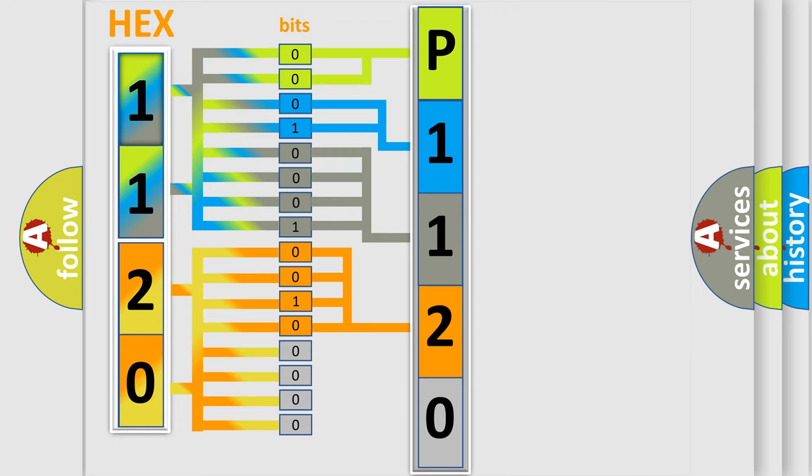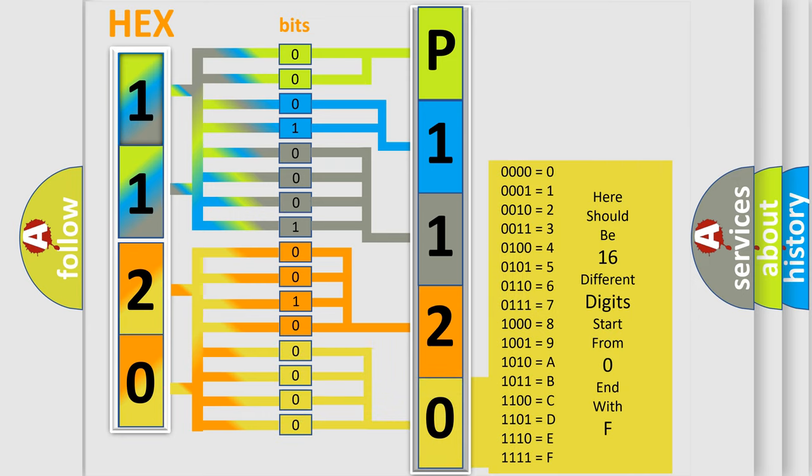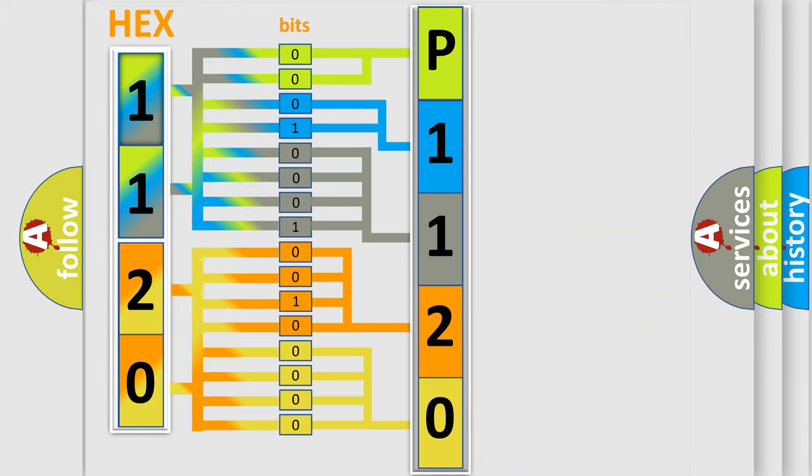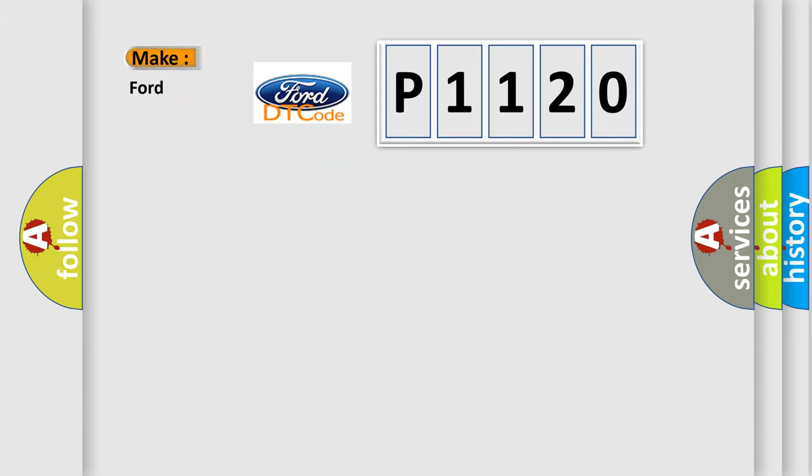A single byte conceals 256 possible combinations. We now know in what way the diagnostic tool translates the received information into a more comprehensible format. The number itself does not make sense if we cannot assign information about what it actually expresses. So, what does the diagnostic trouble code P1120 interpret specifically for Infinity car manufacturers?